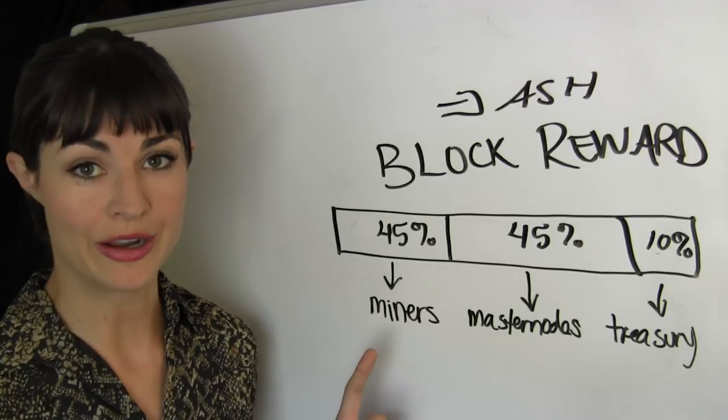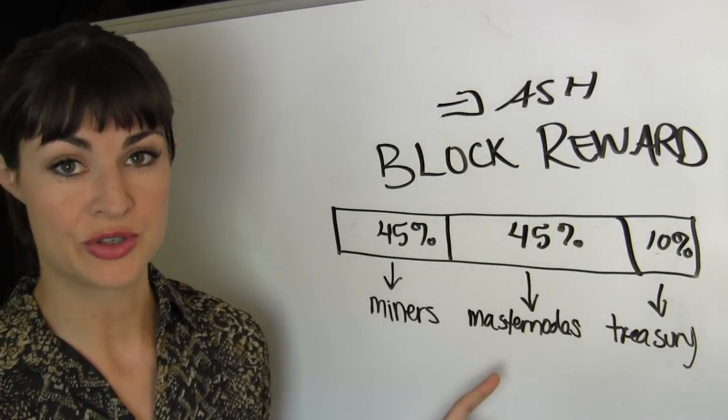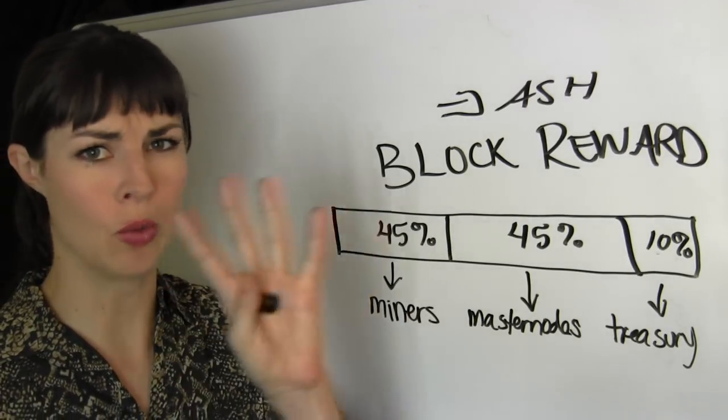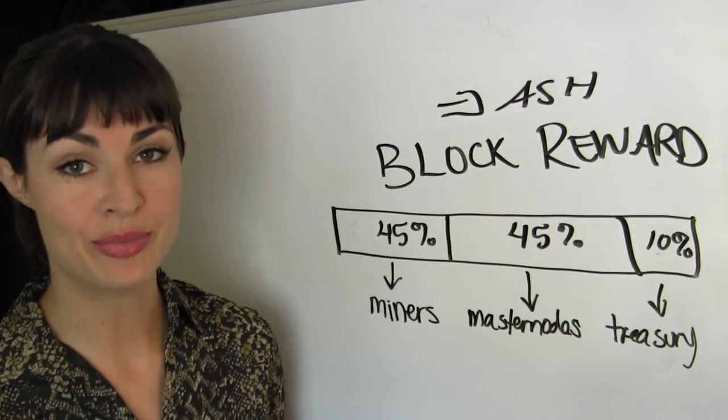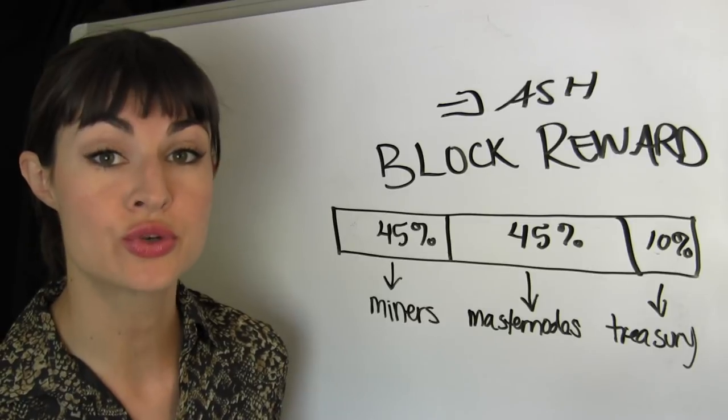In Dash, we divide up our block reward into three different parts. Forty-five percent gets paid to our miners. Another forty-five percent goes to our masternodes. Whoa, what is that fancy word? We'll get to that next lesson. And that leaves ten percent, which acts as our treasury.